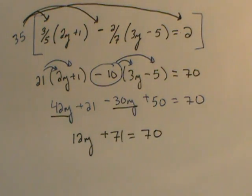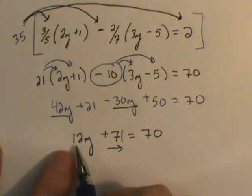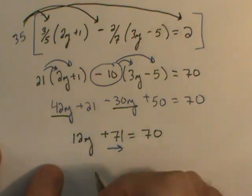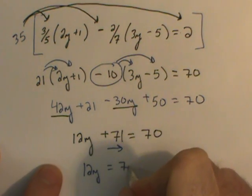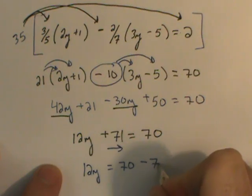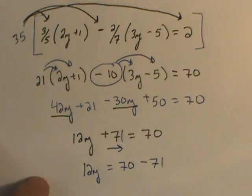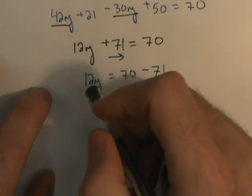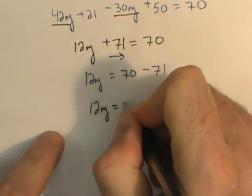With this equation, my goal in algebra is to get the variable by itself. So I definitely will move this 71. The coefficient right here is already positive. I'll write it as 12y equals 70 take away 71. The positive 71 goes to the other side as a negative 71. 70 take away 71 is negative 1, and so I have 12y equaling negative 1.